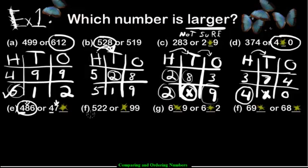How about the next one? We have five hundreds here and star-hundreds — we don't know what that number is, it's covered up. Is it a tie? I don't know. Is five bigger than this? I don't know. Is five smaller? I can't tell. So we're stuck — again, we're unsure.